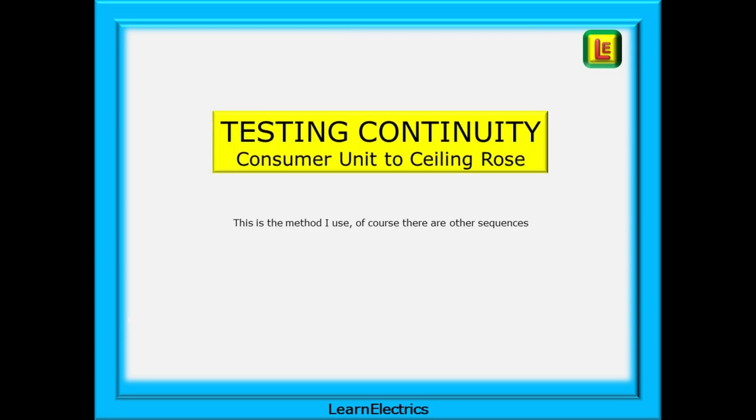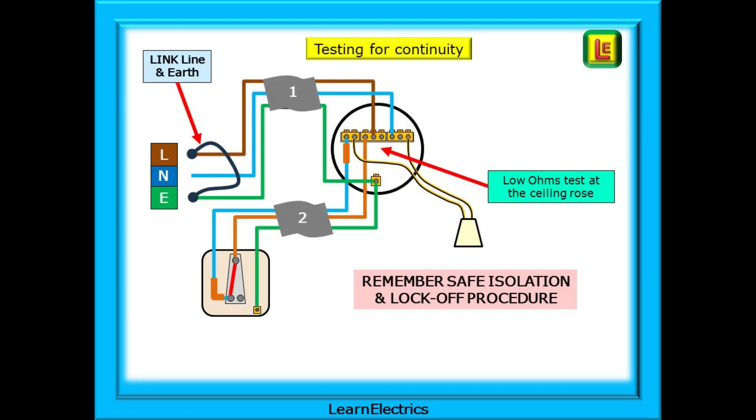We should begin with testing continuity between the consumer unit and the ceiling rows. Not all books will show this test but I always do this first since if this bit is not right then nothing else is going to work as it should. To set up the test we first carry out a safe isolation procedure and lock off.